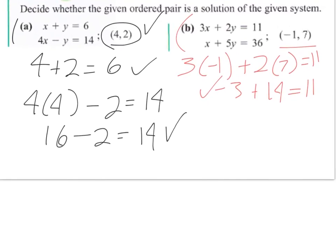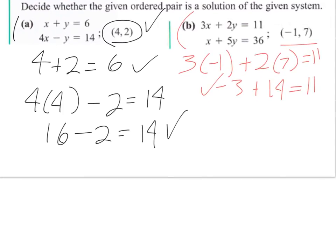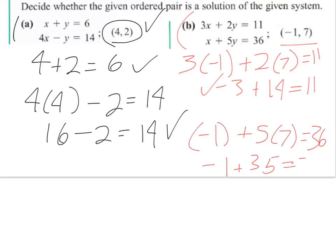Giving myself a little more room here to check on the x plus 5y equals 36. If I plug the negative 1 in for x plus 5 times 7 equals 36, we see we get negative 1 plus 35 equals 36, so that is not true. So negative 1, 7 is not a solution to that system.